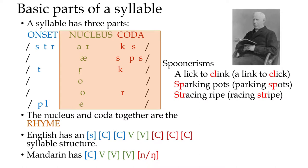There's a famous story of Reverend Spooner, a don at Oxford College, who would switch the onsets of syllables — for example, 'a link to click' became 'a lick to clink,' 'parking spots' became 'sparking pots,' 'racing stripe' became 'stracing ripe,' keeping the rhyme the same but switching the onsets. This is evidence that we store the onset separately from the rhyme, which is why it's easy for speakers to come up with rhyming words — we can strip off the onset and replace it.